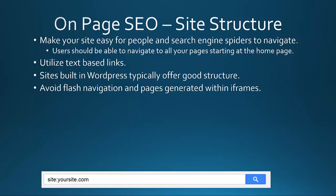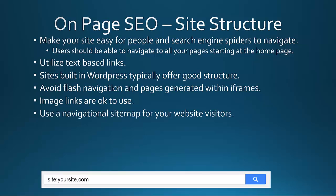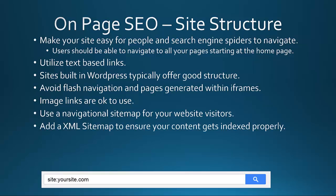There are certain applications where this could work, but not if your ultimate goal is to get search engine traffic and on-page SEO. So avoid that at all possible. Image links are okay to use, but text links are still the best for getting spidered. Use a navigational sitemap for your website visitors, and add an XML sitemap to ensure your content gets indexed properly — especially if you're using WordPress.